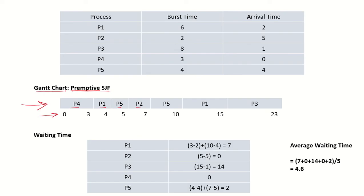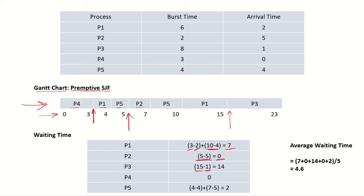Looking at the wait time for P1: it got the CPU at time unit 3 but arrived at time unit 2, and then had to wait again from 4 to 10. So the total wait time for P1 is 7. For P2, it got the CPU at time unit 5 and arrived at 5, so its wait time is 0. For P3, it got the CPU at 15 and arrived at 1, so wait time is 14. For P4, it arrived at 0 and got the CPU at 0, so wait time is 0.